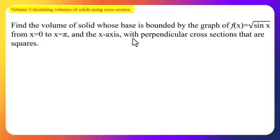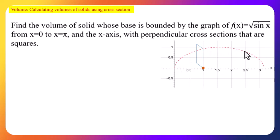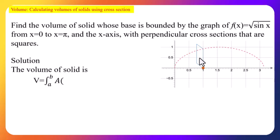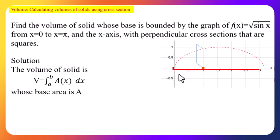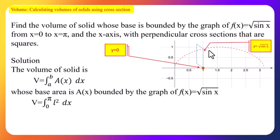We plot f(x) = √(sin x) and construct a square formed by the point on the graph. Using the formula, volume = ∫₀^π A dx, where A is the cross-section area. Since the cross-section is a square, A = l². The y-value at the x-axis is 0, and the y-value on the graph is √(sin x), so the side length l = √(sin x) − 0 = √(sin x).